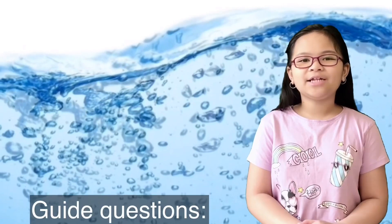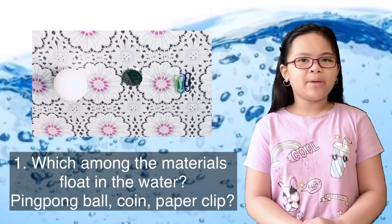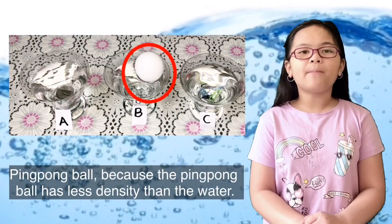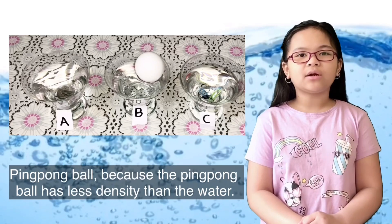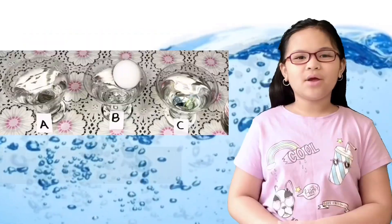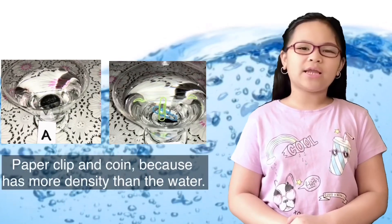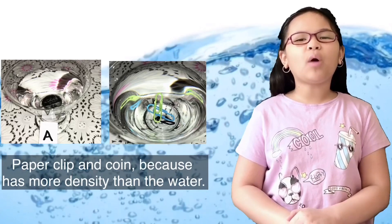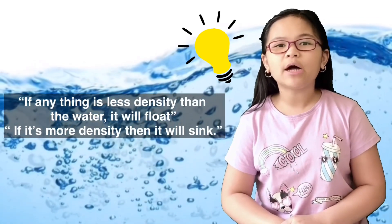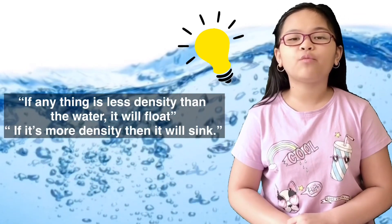Let's answer the guide questions. First question: which among the materials floated — the ping pong ball, the coin, or the paper clip? The ping pong ball, because it has less density than the water's density. Also, the ping pong ball is hollow and has pretty much no density. Which of them sank? The paper clip and the coin, because both have more density than the density of water. Remember, kids: if any object has less or equal density to water, it will float. But if the object has more density than water, it will sink.